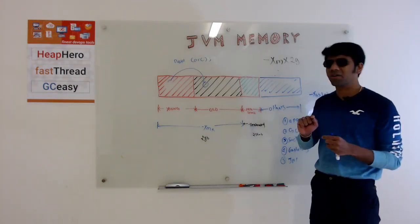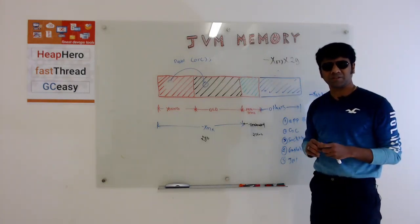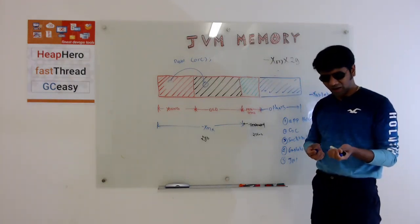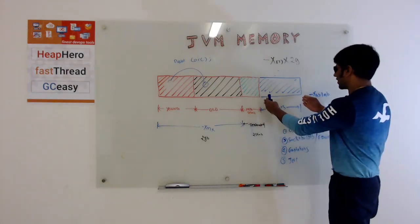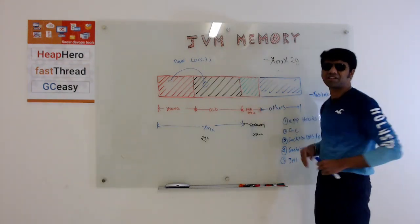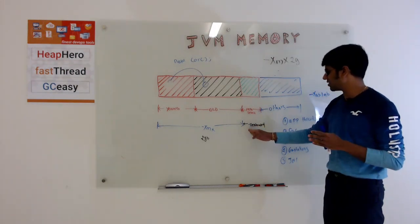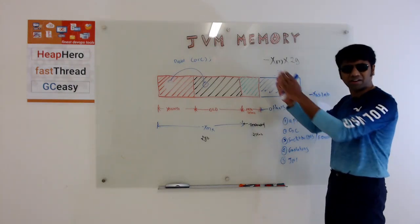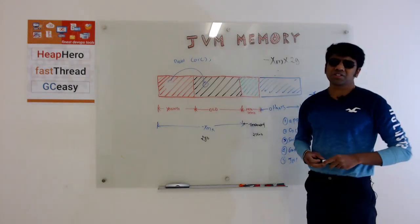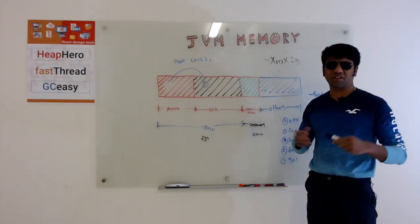So thus your entire Java process, when you look in top, it will go beyond what you define here in XMX. You might have a question: is there any way that I can limit the size of this others region? Is there any way that I can put a max cap? Here there is XMX, here is max metaspace. Is there anything that I can define here to define a cap? Unfortunately, there is no such single parameter which you can define.